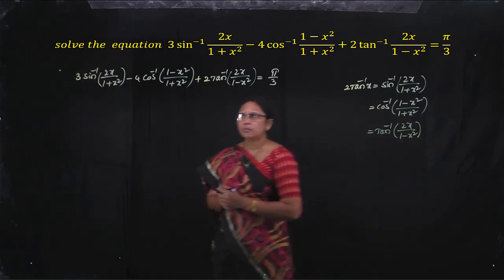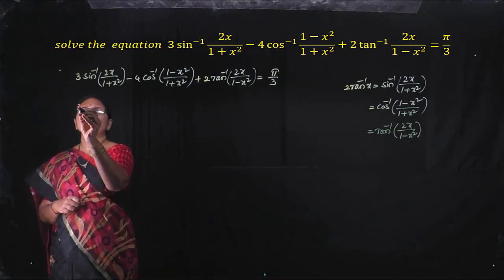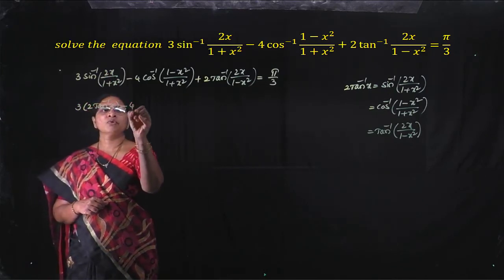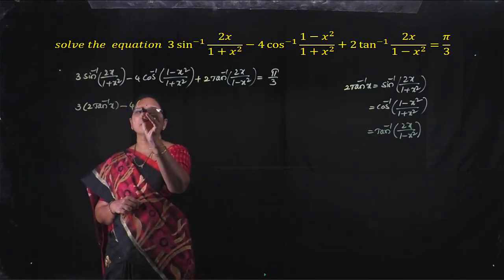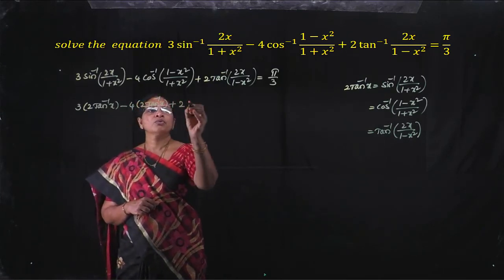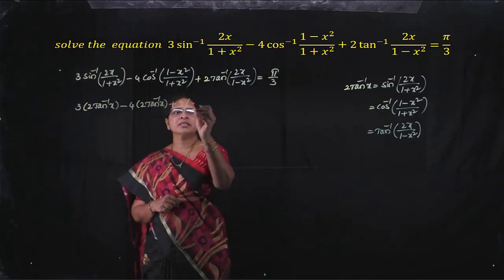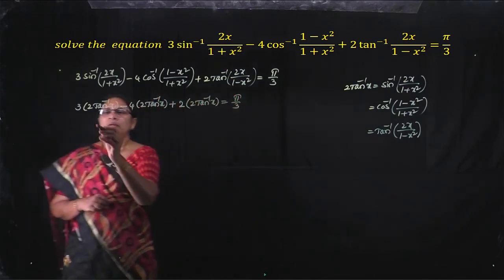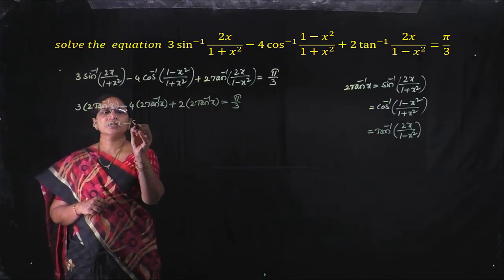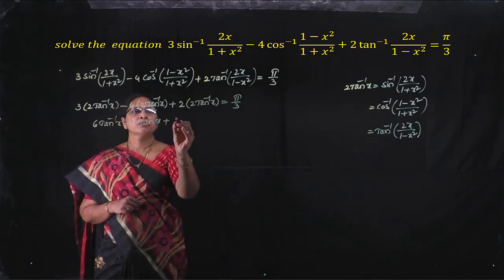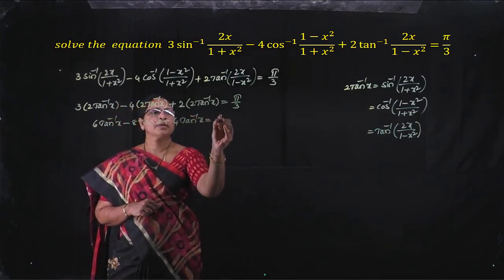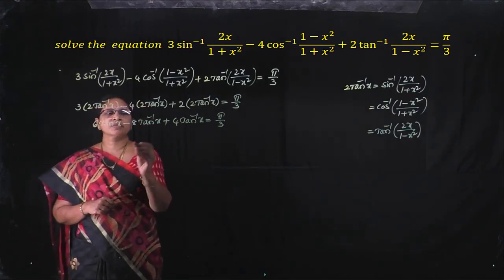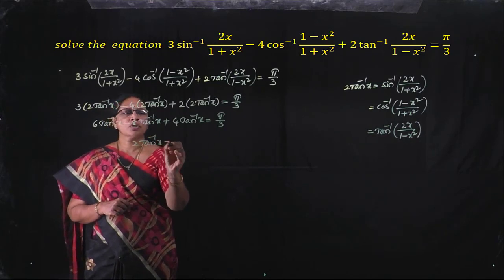Applying these three formulas, the equation becomes 3 into 2 tan inverse x minus 4 into 2 tan inverse x plus 2 into 2 tan inverse x equals π by 3. That gives 6 tan inverse x minus 8 tan inverse x plus 4 tan inverse x equals π by 3, which simplifies to 2 tan inverse x equals π by 3.